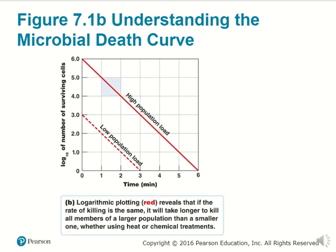Logarithmic plotting of microbial death curves reveals that if the rate of killing is the same, it will take longer to kill all members of a larger population than a smaller one, whether using heat or chemical treatments. Essentially, if you're starting with a smaller population and it dies at the same rate as a larger one, it will take much longer to eliminate the population that started larger.